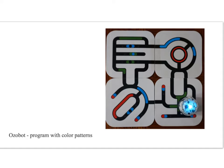Here you see the Ozobot. It's pretty small and it has some built-in capabilities. It will follow a line, and this is one of the pre-established tracks that comes with the Ozobot. In addition, it will interpret color patterns in the line as signals to do different things.